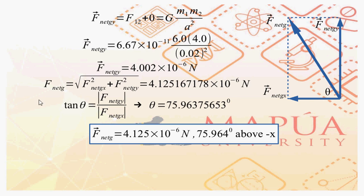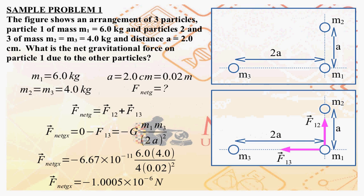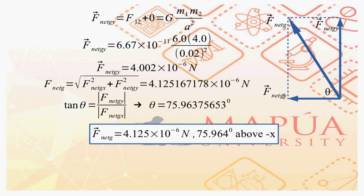Knowing F_net_g_x and F_net_g_y, we can get the net gravitational force F_net_g. F_net_g_x is negative, so it points in the horizontal negative direction. F_net_g_y is positive, so it points in the vertical positive direction. Completing the rectangle, the hypotenuse is F_net_g. Since it's the hypotenuse, we use the Pythagorean theorem to determine its magnitude. F_net_g equals 4.125167178 times 10 to the negative 6 newtons.